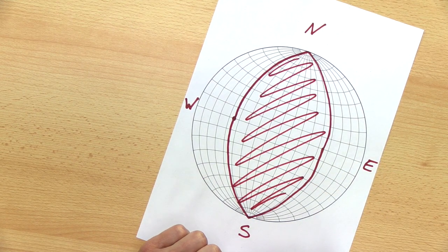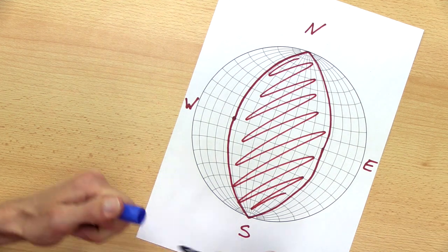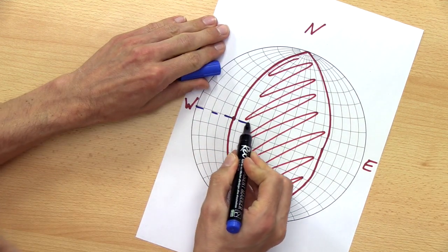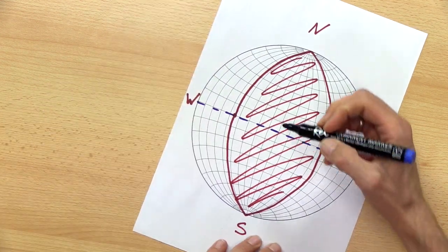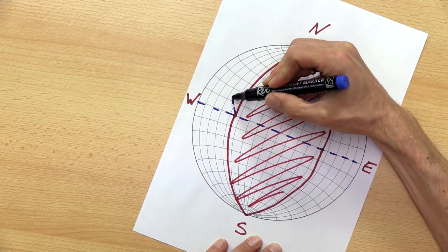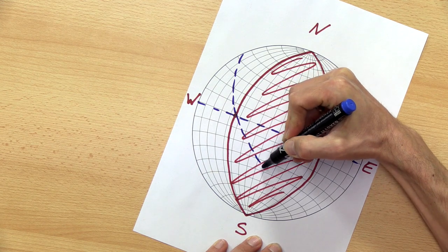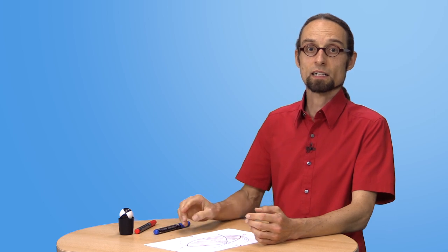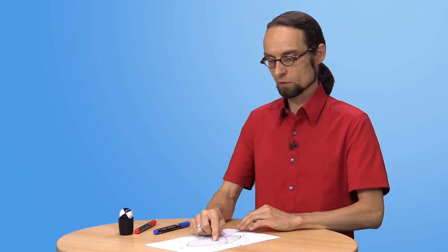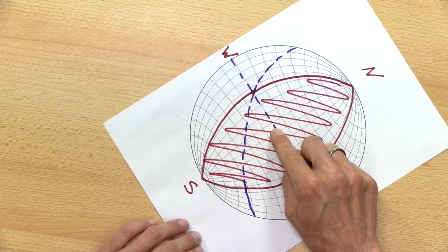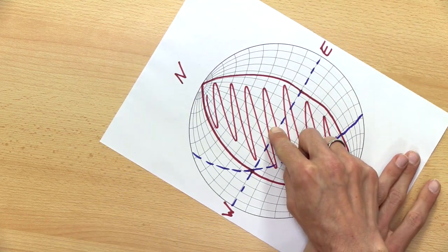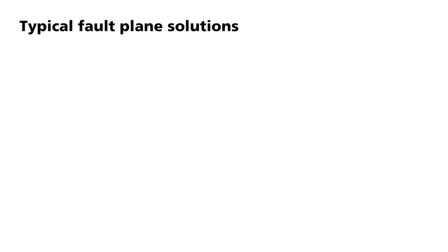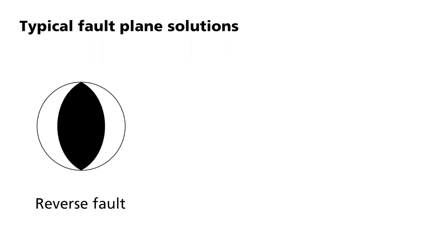For other slip directions, auxiliary planes are located here and here, for example. If the strike is not oriented in north-south direction, the entire beach ball is rotated. Hence, a pure reverse fold appears on the beach ball as a black lens. A pure normal fold with the same nodal planes is colored in the exact reverse manner.